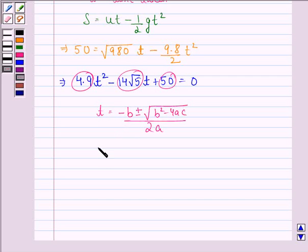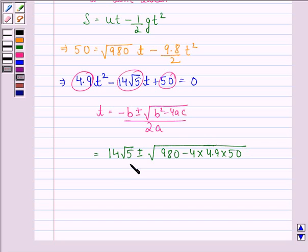So we will simply put in the values and we have 14√5 ± √(980 - 4 × 4.9 × 50) divided by 2 × 4.9.